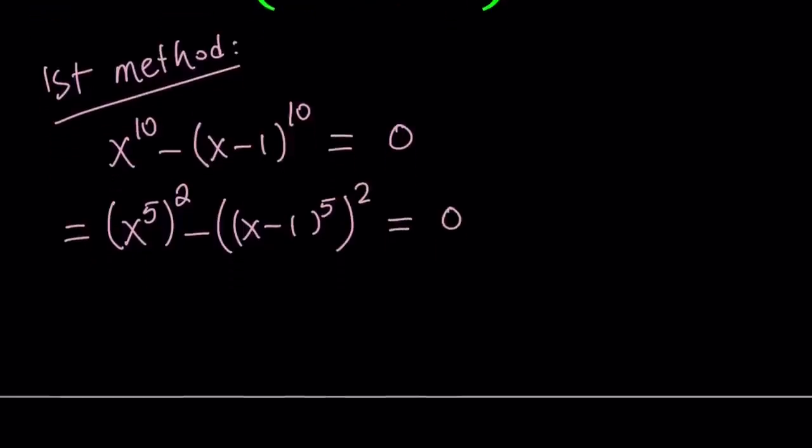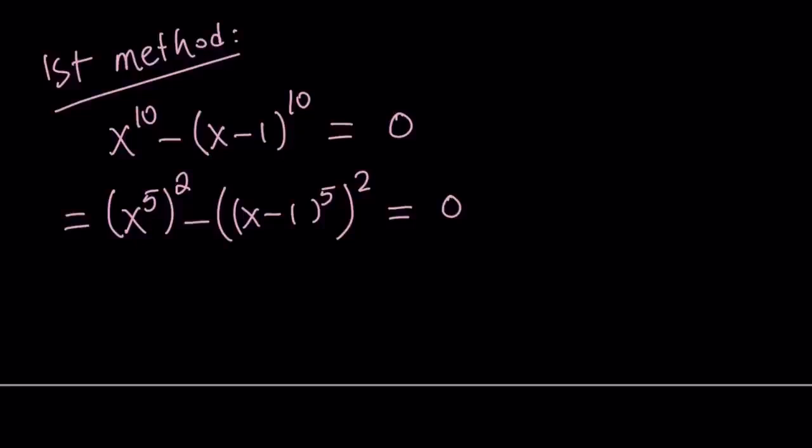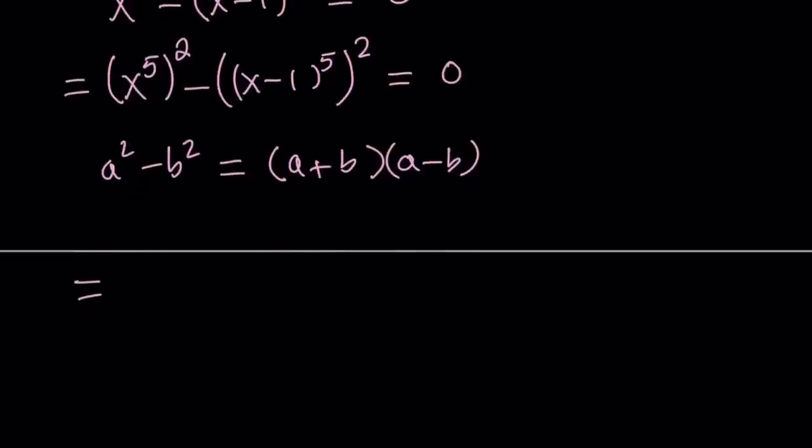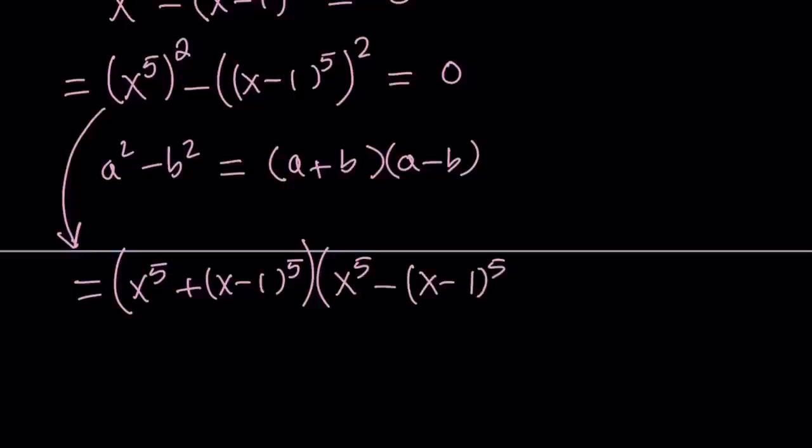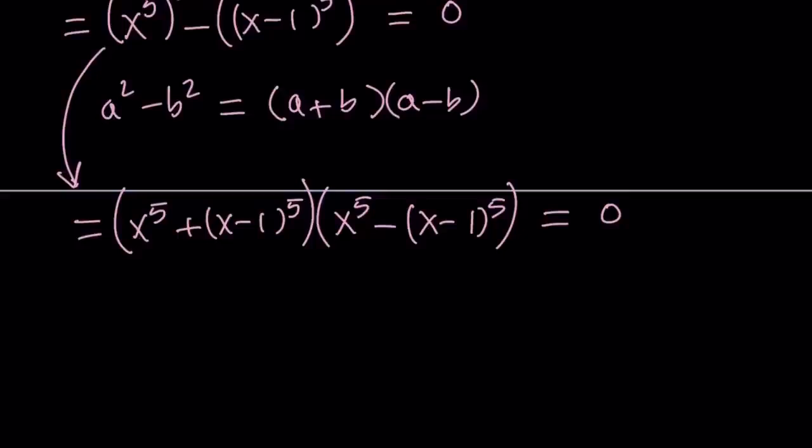Now this became difference of two squares. And as you know, there is a formula for difference of two squares, which is super important. A squared minus b squared can be factored as a minus b times a plus b. Now using that rule, we can factor this expression as x to the fifth plus x minus 1 to the fifth multiplied by x to the fifth minus x minus 1 to the fifth, and that equals zero.